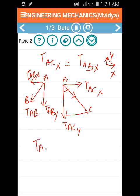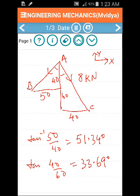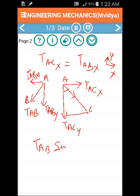We have TAB times sin 51.34 degrees equals TAC times sin 33.69 degrees. TAC is already given as 8 kilonewtons, so we can substitute 8 sin 33.69.